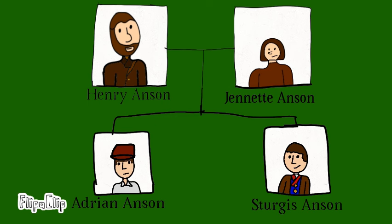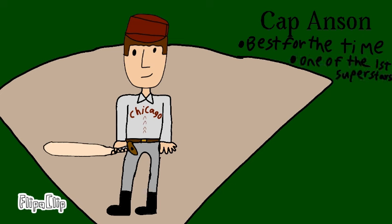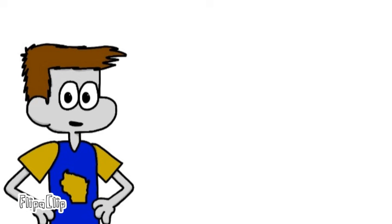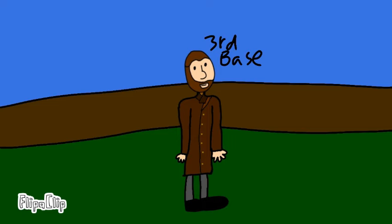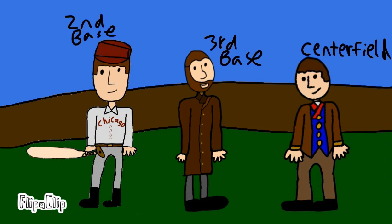Interestingly enough, founder Henry Anson was the father of Major League Baseball player Adrian Cap Anson, who was known as the greatest baseball player of his time and one of the very first superstars of baseball. At the age of 15, Adrian played for Marshalltown's town team, which featured his father Henry Anson at third base, his brother Sturgis at centerfield, and Adrian himself at second base.